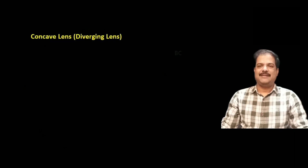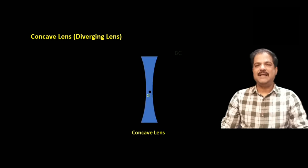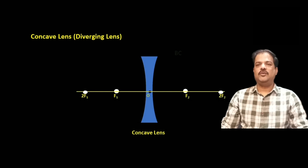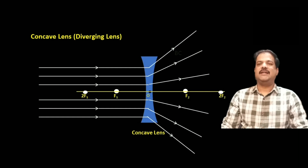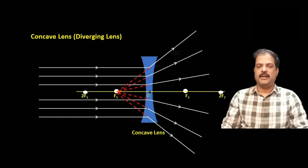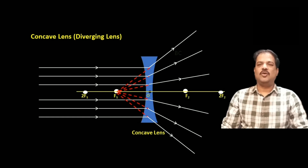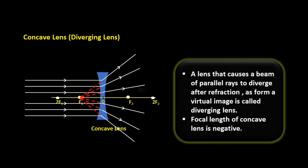Let's see Concave Lens. Concave Lens is known as Diverging Lens. F1 and F2 are the focuses of Concave Lens. Rays coming from objects are parallel to the Principal Axis. After refraction, they diverge — they do not meet in a single point. They go away from each other but appear to be coming from F1. A lens that causes a beam of parallel rays to diverge after refraction and form a virtual image is called a Diverging Lens.